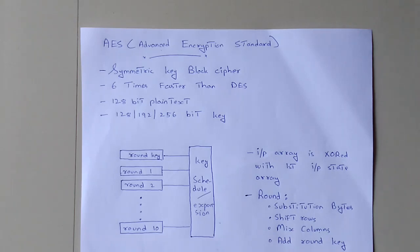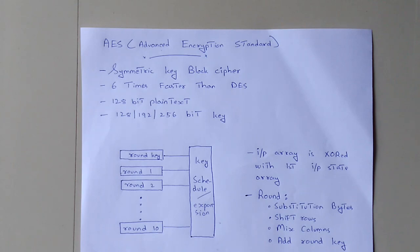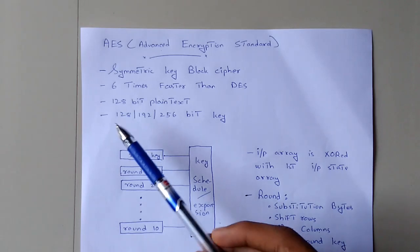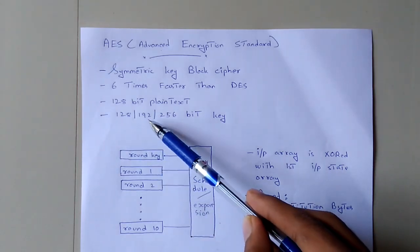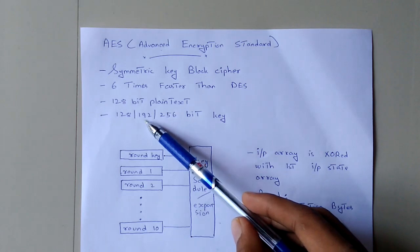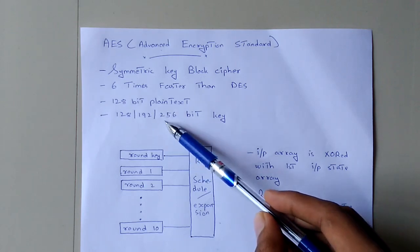This is the basic structure of AES. AES takes a 128-bit plaintext as input. We have three different key lengths: we can use a 128-bit key, a 192-bit key, or a 256-bit key.